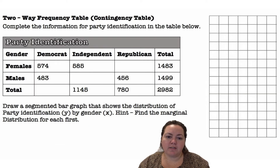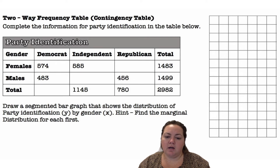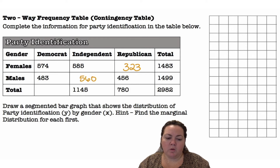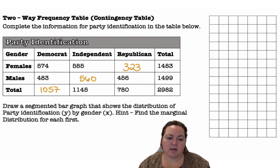A two-way frequency table, also called a contingency table — complete the information for the party identification in the table below. We have males and females, Democrat, Independent, and Republican. If I subtract the other two female values, that leads us to 323. We have 1,145 total Independents; subtracting 585 gives 560. And adding the Democrats together, I get 1,057.